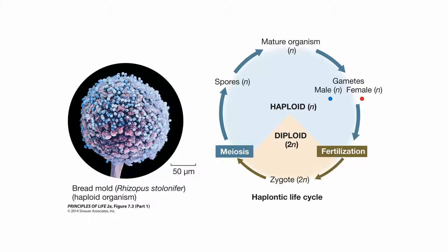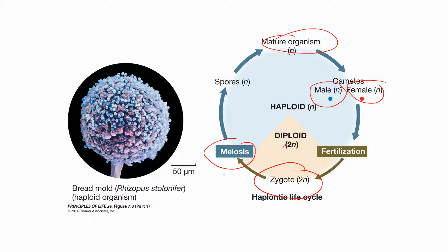Fungi have a different type of life cycle — a primarily haploid life cycle where they'll only come together briefly to form a diploid organism. Their mature organism is haploid; it will through mitosis produce some gametes — sperm and egg cells — which fertilize each other and create a zygote. That zygote exists briefly, undergoes meiosis to produce haploid cells, which then go on to produce the mature organism.